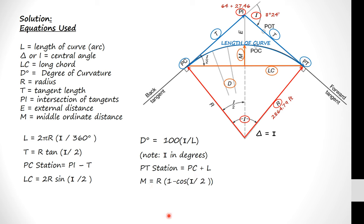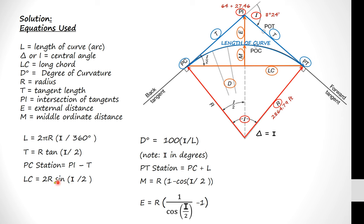The middle ordinate distance is the radius times (1 minus cosine of the intersection angle divided by 2). The external distance is the radius multiplied by (1 over the cosine of the intersection angle divided by 2, minus 1). The PT is the PC plus the length of curve. Notice that in all these equations, once we figure out one value we plug it into the others — we need T before we can find PC. We can find the long chord directly from R and the intersection angle.